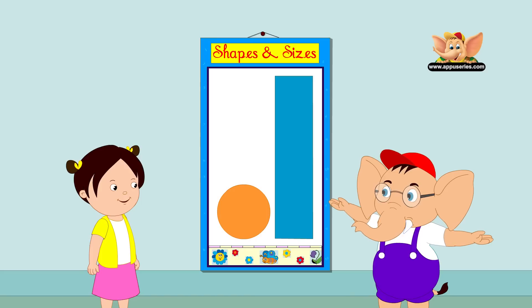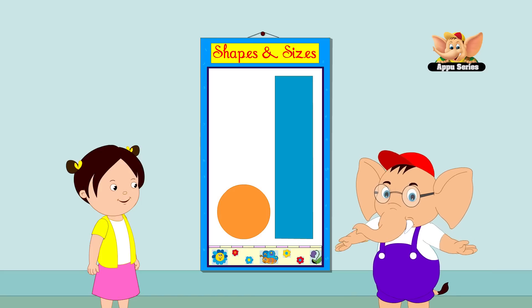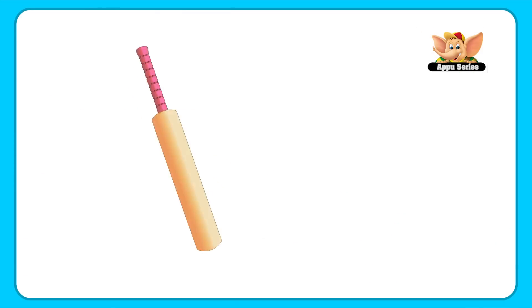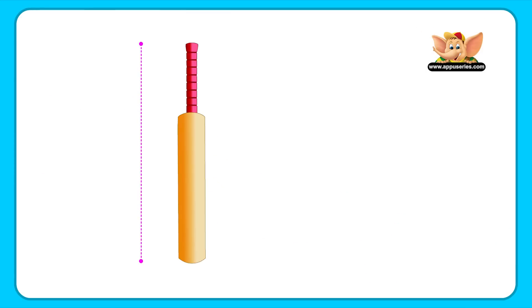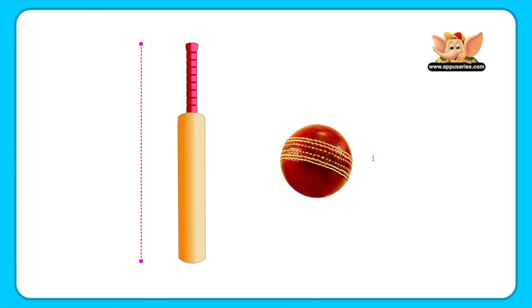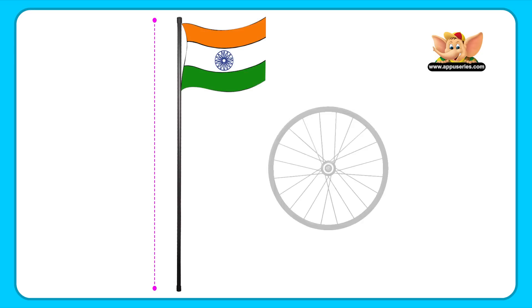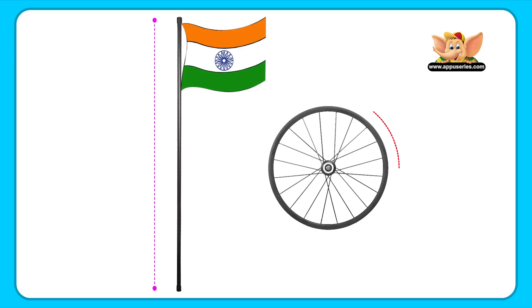Some are long, while some are round. Let's have a look at some examples. A cricket bat is long, while a cricket ball is round. A flagpole is long, while a wheel is round.